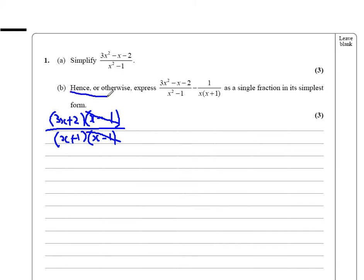Right, part B says hence or otherwise, which basically means we're going to use the result we've just found. We're going to express this minus this as a single fraction in simplest form. Now, what we don't do is actually use this. We use our simplified version.